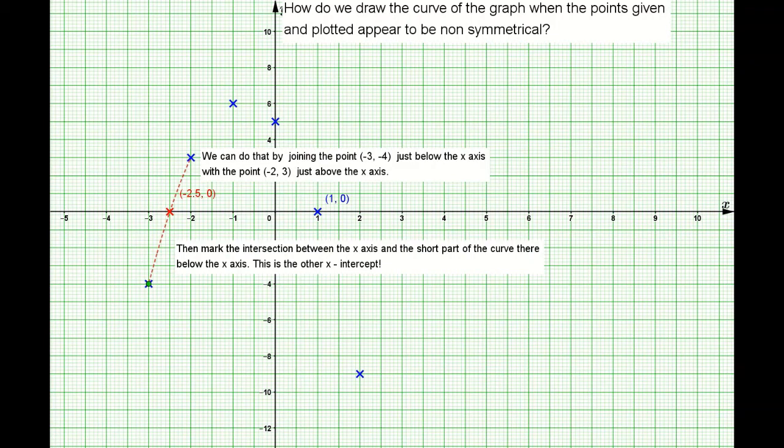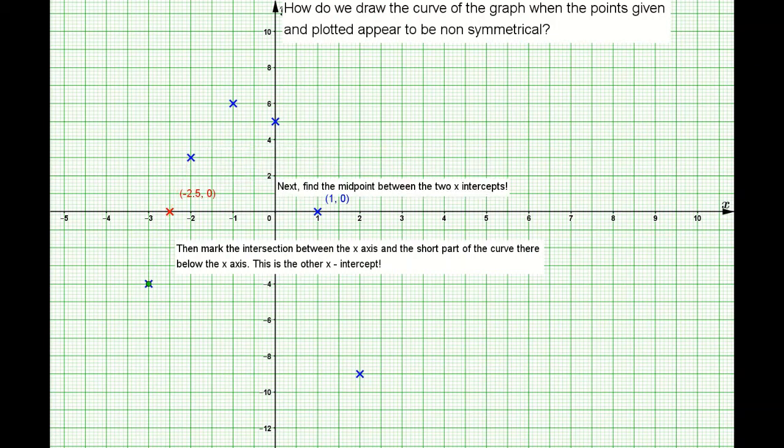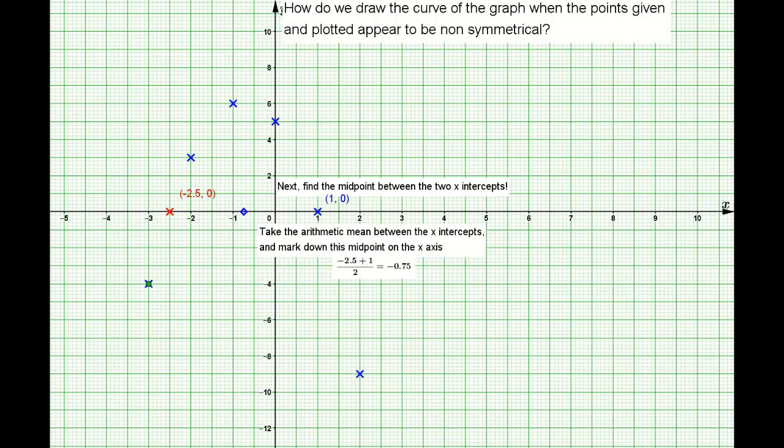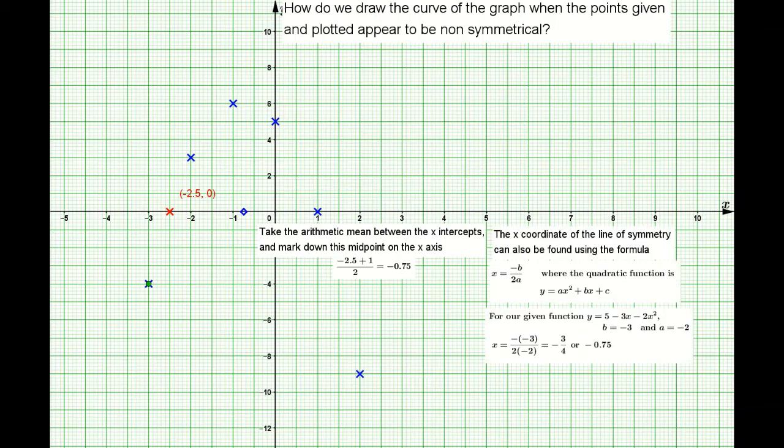Now we can try to look for the midpoint between the two x-intercepts. You take the mean: negative 2.5 plus 1 divided by 2. That's how you get the midpoint, and it's negative 0.75. You can also use a ruler to get the distance between the two x-intercepts and then divide by 2, so you should approximately get that line of symmetry.